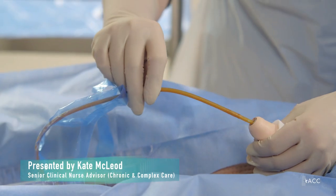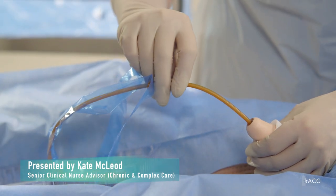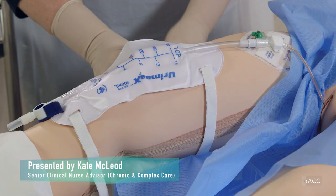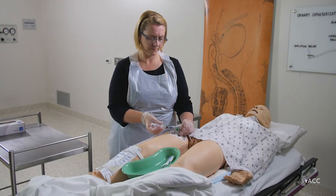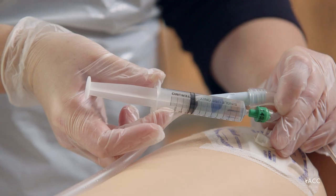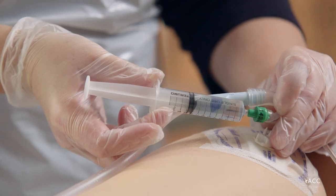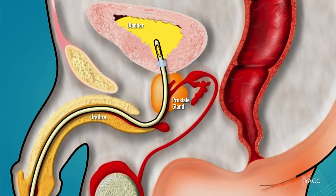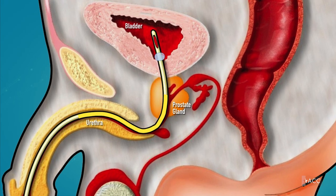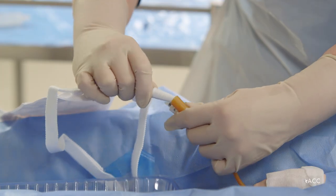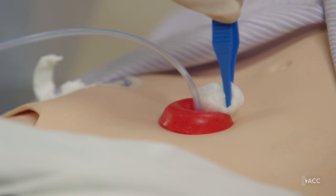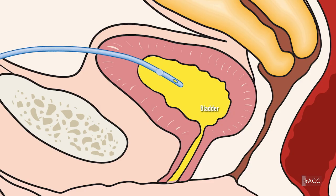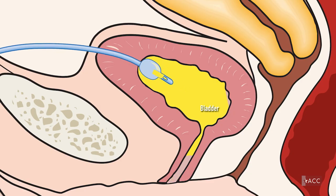A urinary catheter is a hollow tube inserted into the bladder to drain urine. Urinary catheterisation is the passage of a urinary catheter into the bladder via the urethra, which is called urethral or indwelling catheterisation, or through the abdominal wall. This is called suprapubic catheterisation.